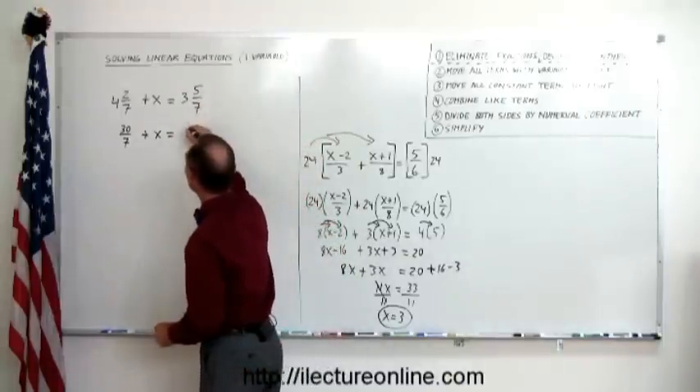We turn a mixed number into an improper fraction. So we have 30/7 plus x equals, and we do the same over here again. 3 times 7 is 21 plus 5 is 26, so this becomes 26/7.